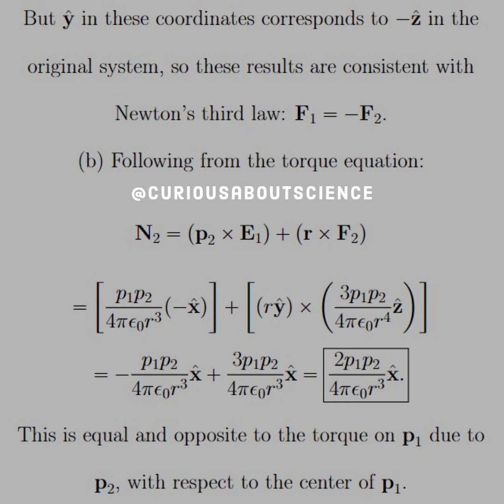And then we notice we have the same factor. So 1 minus 3, or negative 1 plus 3 equals 2. And we see that our net torque is equal to 2P1P2 over 4πε₀r³ in the x hat direction. This is equal and opposite to the torque P1 due to P2 with respect to the center of P1. Great to see consistency amongst these things.